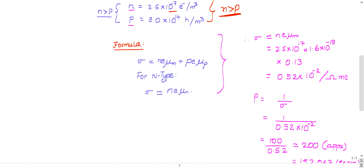Simply use the formula σ = n*e*μₙ. Substitute the given values: e is 1.6×10^-19, μₙ is 0.13, and n is 2.5×10^17.